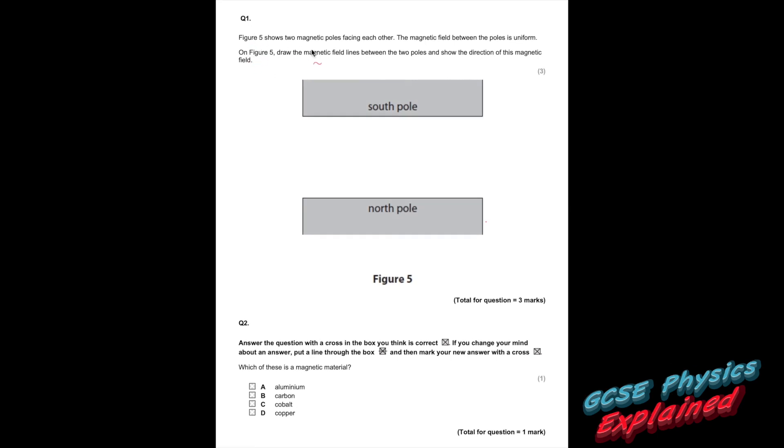Question 1. Figure 5 shows two magnetic poles facing each other. The magnetic field between the poles is uniform. On figure 5, draw the magnetic field lines between the two poles and show the direction of this magnetic field. Well, if it's uniform, that basically means that you need to draw straight lines equidistant apart, which means equal distance apart. And the only other thing that you need to do is make sure you draw at least three lines and show the direction of the magnetic field, which always goes from the North Pole into the South Pole. Three marks. Easy.